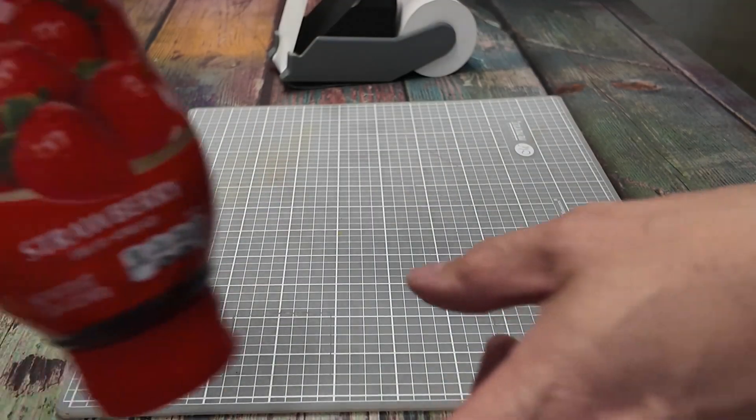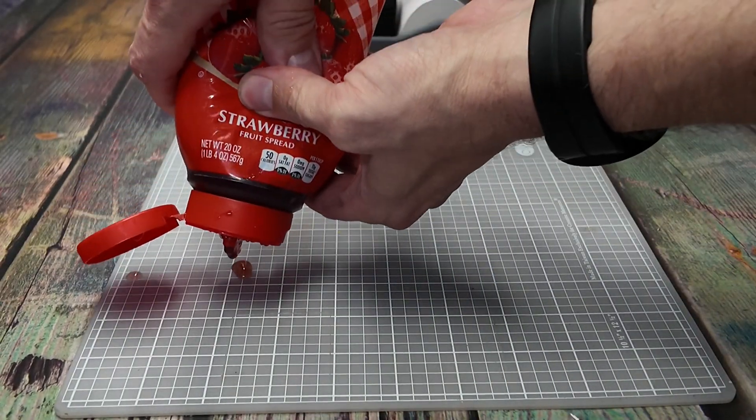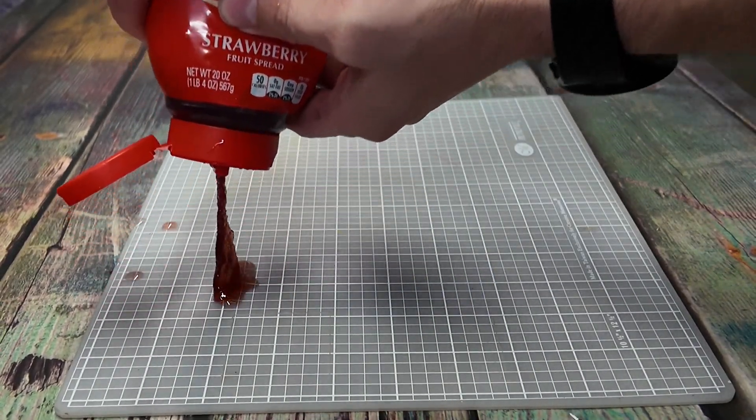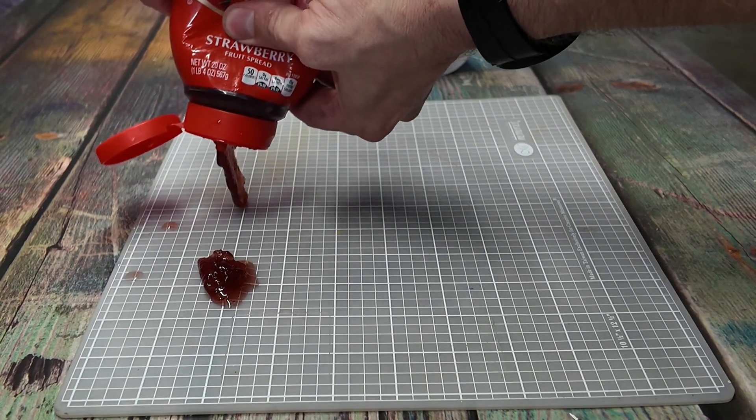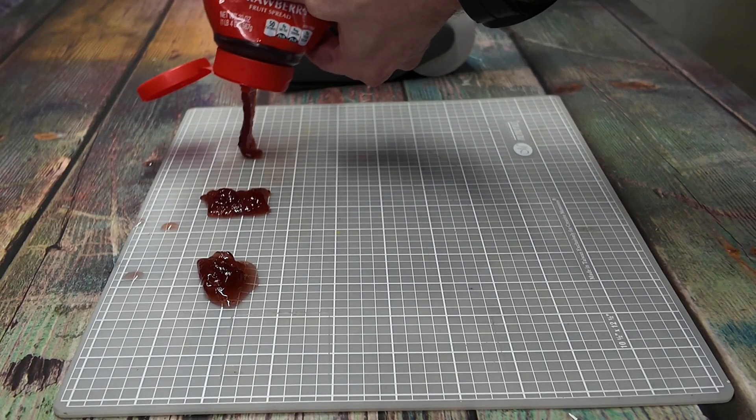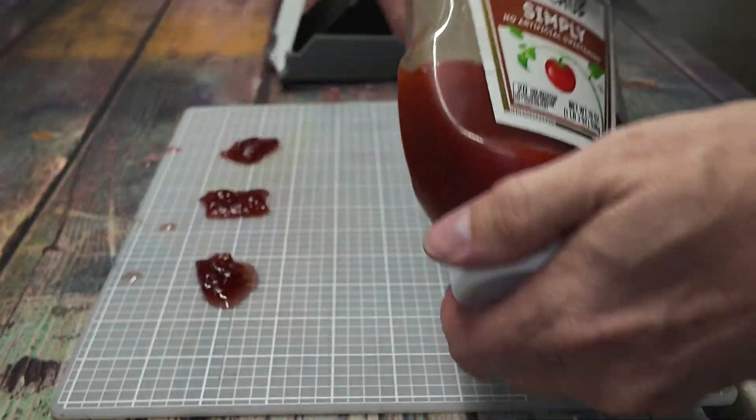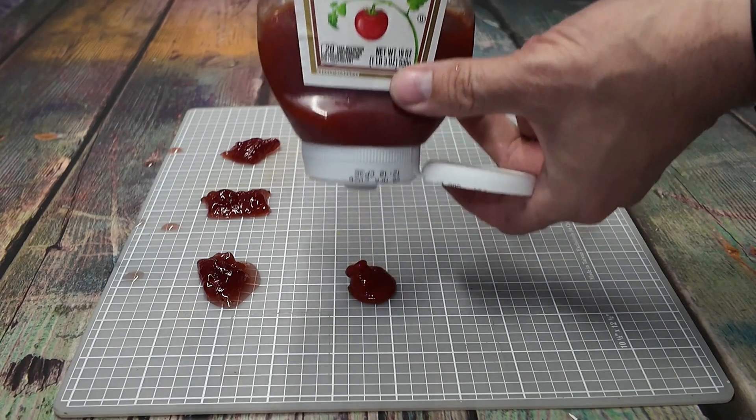All right, time for the test. I'm cautiously optimistic here. We'll start with ketchup, mustard, and maybe even a little jam, because why not? We're testing this on a smooth surface, similar to a countertop or a tabletop.